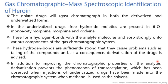Due to that interaction of hydrogen bonds with the chromatographic column there is tailing, and that's why there is a need to derivatize the given compound. In addition to improving the chromatographic properties of the analyte, derivatization prevents the phenomenon of transacetylation, which has been observed when injections of underivatized drug are made into the chromatographic system when methanol is used as a solvent. Hence, to avert that, derivatization is a must.